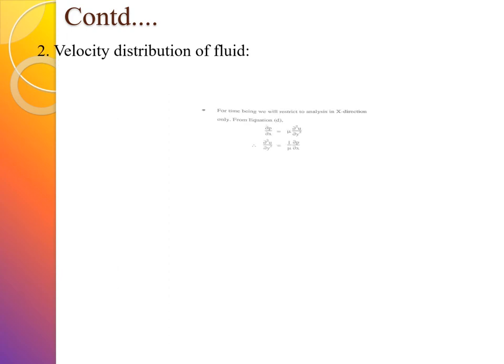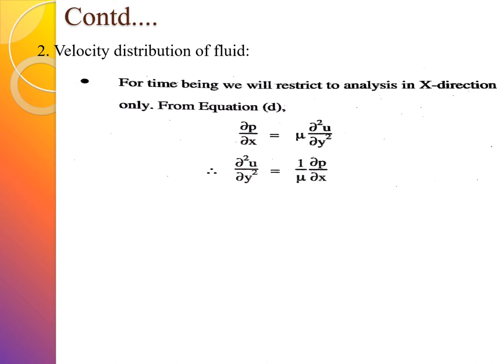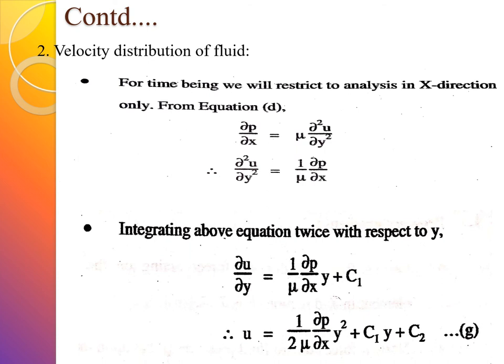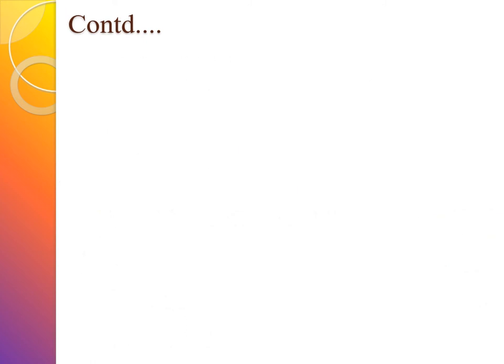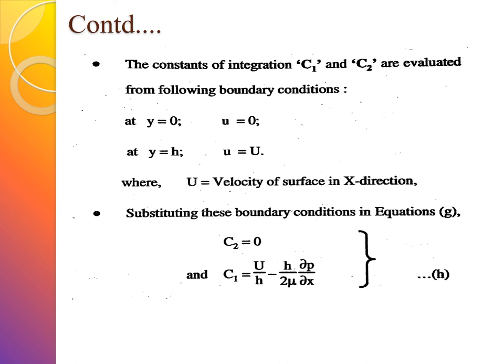For velocity distribution, we restrict the analysis to the x-direction. From the previous equation, ∂p/∂x = μ·∂²u/∂y². Rearranging, ∂²u/∂y² = (1/μ)·∂p/∂x. Integrating once with respect to y: ∂u/∂y = (1/μ)·∂p/∂x·y + C₁. Integrating a second time: u = (1/2μ)·∂p/∂x·y² + C₁y + C₂.